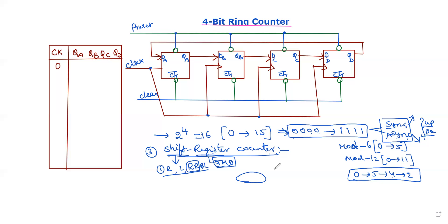Suppose you have an example with 4 bits: 1, 0, 0, 1. Now, we have a right-shifting operation.